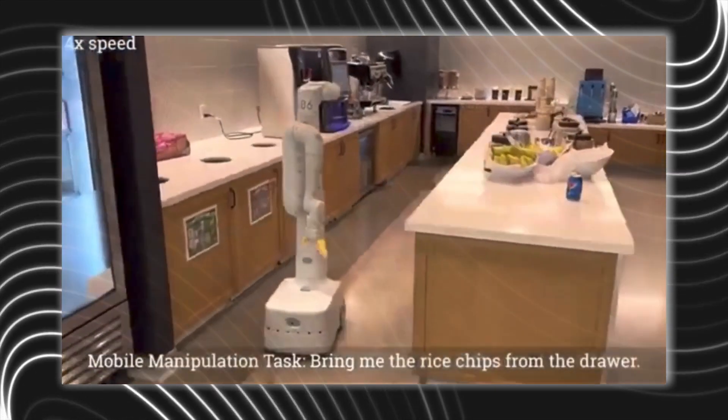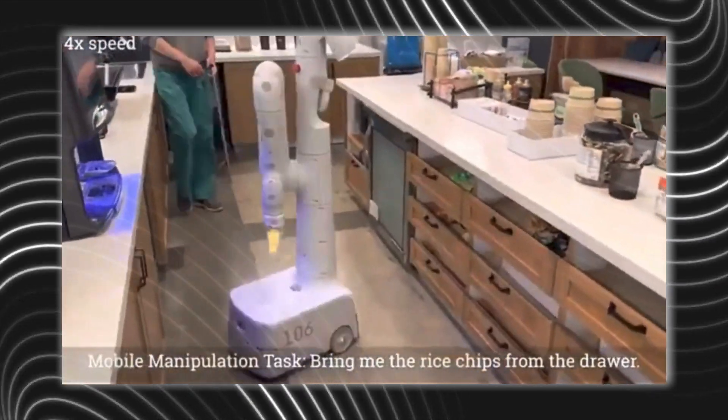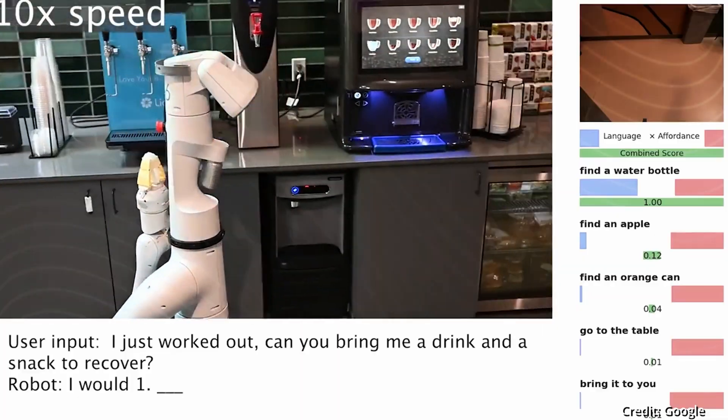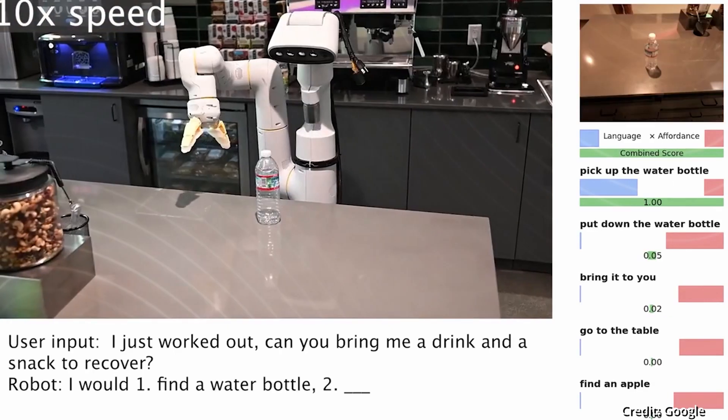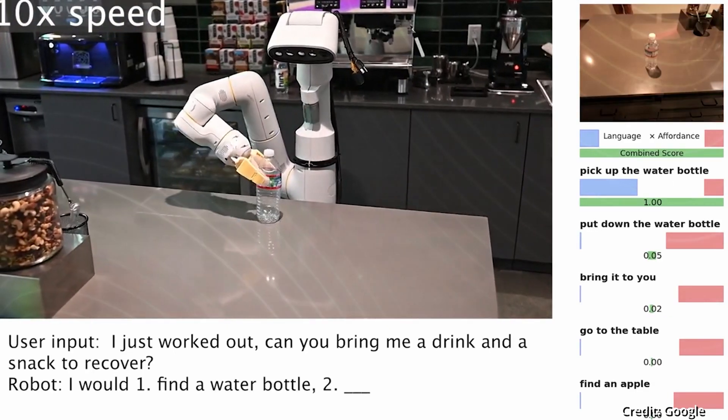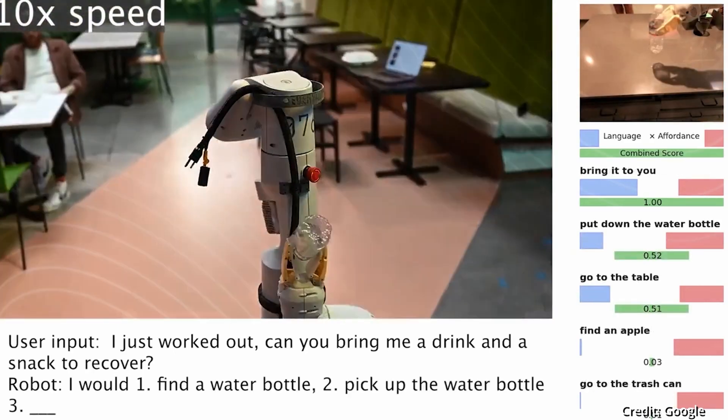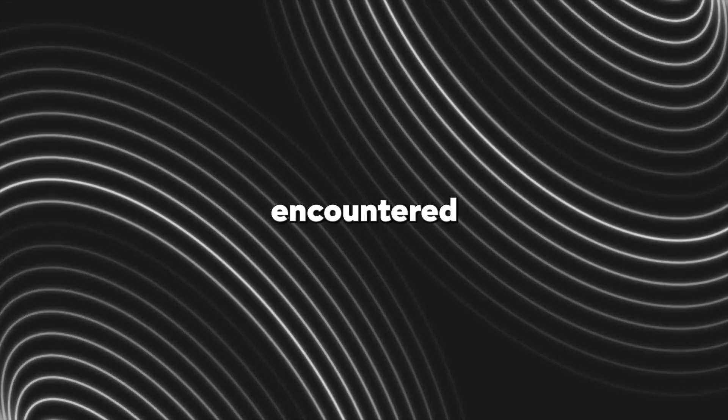RoboCat's training did not involve exposure to data featuring human hands. Even so, it exhibits robust performance when encountering out-of-distribution goal images. And it's not just human hands that it has never encountered. It's also never seen Sawyer robots lifting objects either.